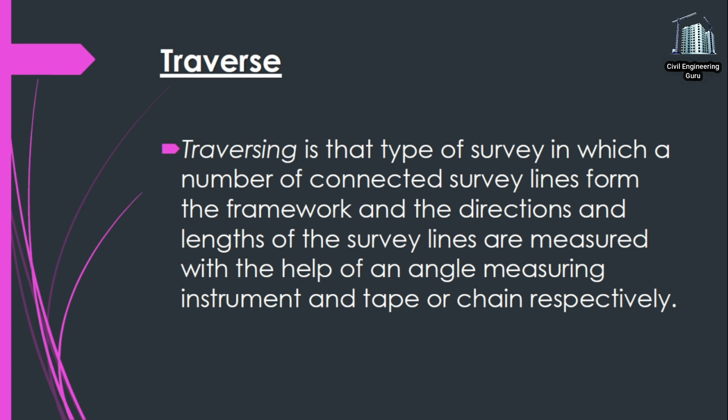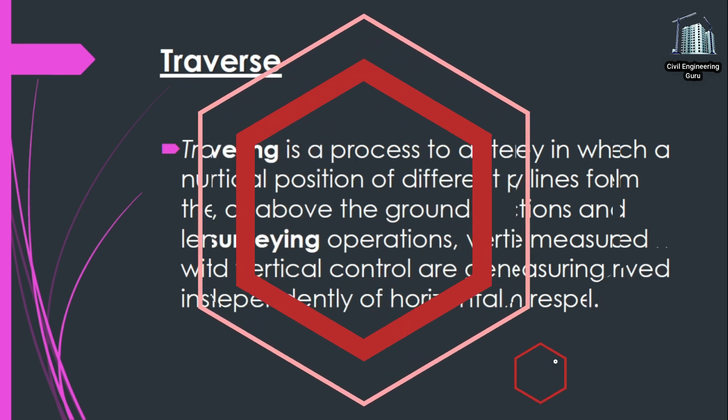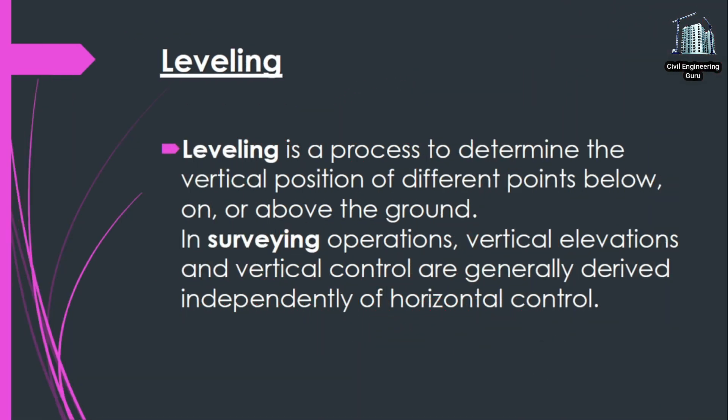Traversing is that type of survey in which a number of connected survey lines form the framework, and the directions and lengths of the survey lines are measured with the help of an angle measuring instrument and tape chain respectively. Leveling is a process to determine the vertical position of different points below, on, or above the ground. In surveying operations, vertical elevations and vertical control are generally derived independently of horizontal control.